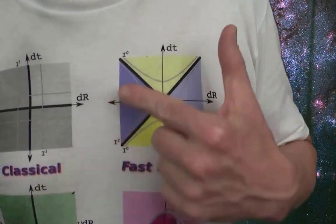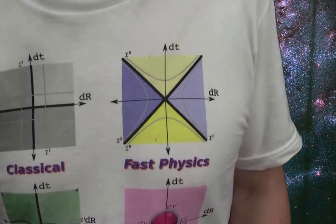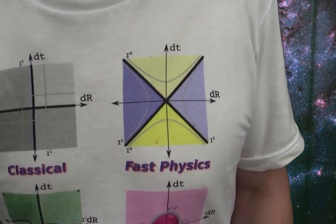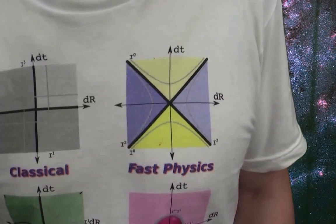It's in that X sort of thing, the 45 degree lines. That is where light goes. If you have a mass, you can never go that fast.